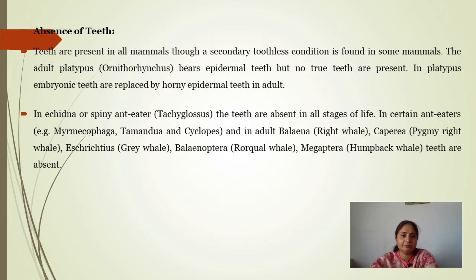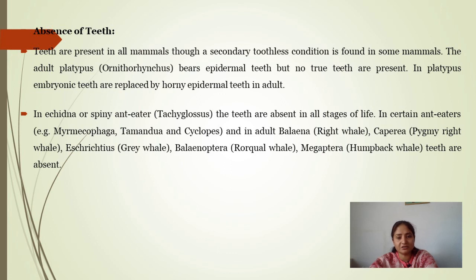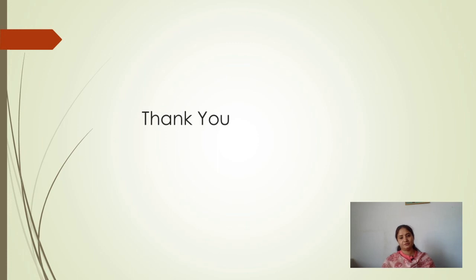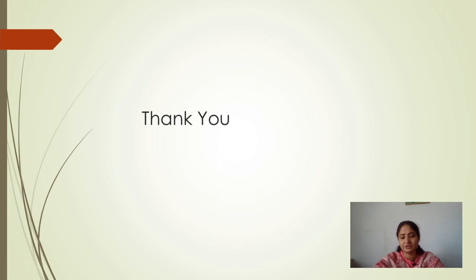Absence of teeth: teeth are present in all mammals but secondarily toothless condition is found in some. In Ornithorhynchus, no true teeth are present — platypus embryonic teeth are replaced by horny plates. In Echidna (Tachyglossus), teeth are completely absent at all stages of life. Certain anteaters like Myrmecophaga and adult baleen whales also lack teeth. This concludes the dentition topic — remember the examples, feeding habits, and structural type variations according to diet.